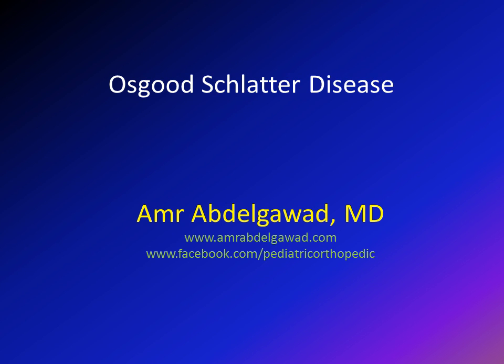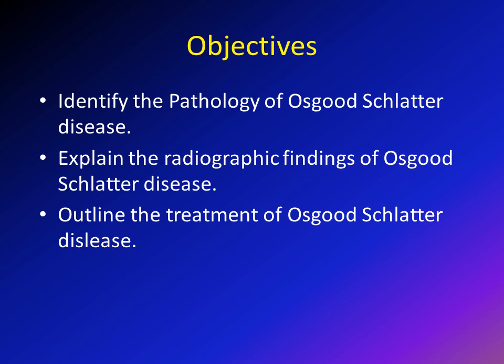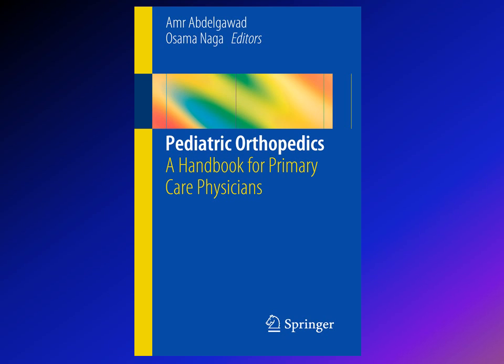Hi, this is Amr Abdi Gawad and we're going to discuss in this lecture Osgood-Schlatter disease. The objectives are: first, we'll speak about the pathology of Osgood-Schlatter, then the radiographic findings, and finally the treatment. A good source you can use is the book Pediatric Orthopedic: A Handbook for Primary Care Physicians by myself and Dr. Naga.